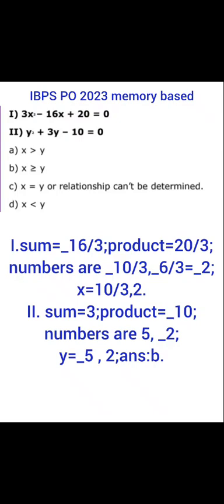For the second equation, y² + 3y - 10 = 0. Since the y² term is 1, we can directly take the sum as 3 and the product as -10.